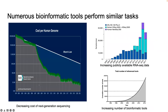We all know that over time the cost of next generation sequencing data generation has dropped precipitously. And as that cost has dropped, the number of data sets that are publicly available, like RNA sequencing data, has exploded. At the same time, there are an increasing number of bioinformatic tools that have been developed to process this data.